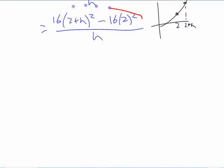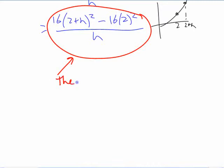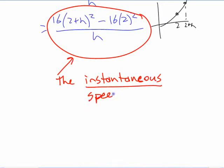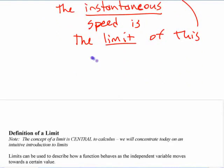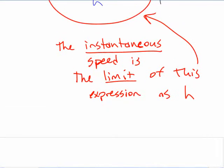The instantaneous speed is the limit of this expression as h, not x, right, as h, because on the calculator we used x.